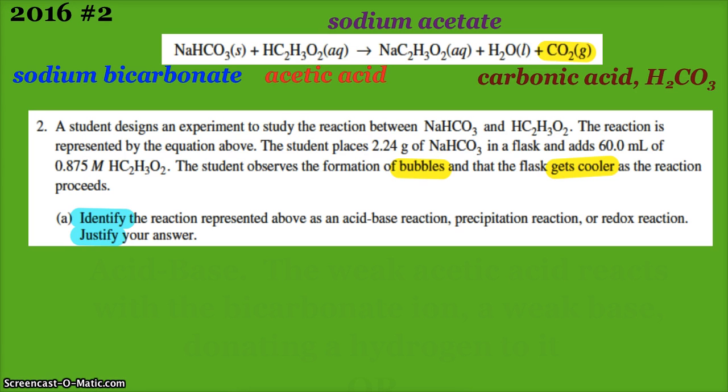So you gotta hopefully recognize those formulas of things we've used throughout the year. Now, the student places 2.24 grams of sodium bicarb in a flask, adds 60 mL of acetic acid. This is kind of like when we did the hovering bubbles lab—we put sodium bicarbonate in the container and then added the acid to make bubbles. The student observes the formation of bubbles, and the flask gets colder—endothermic.